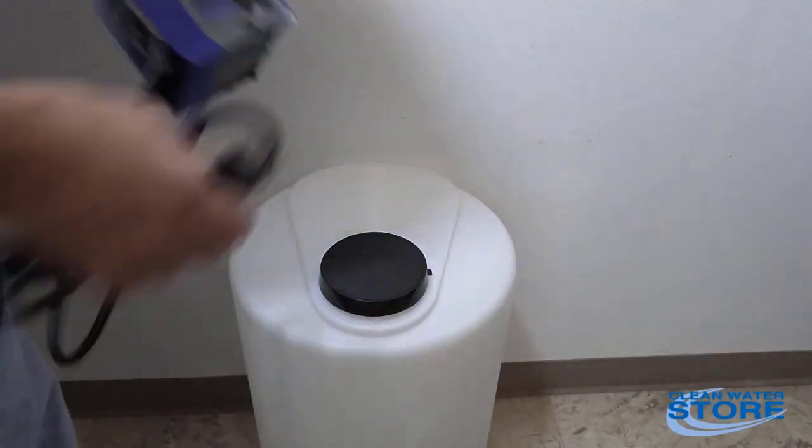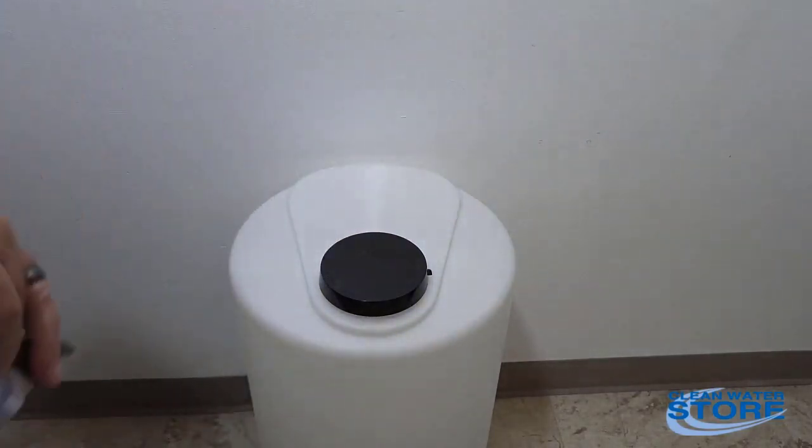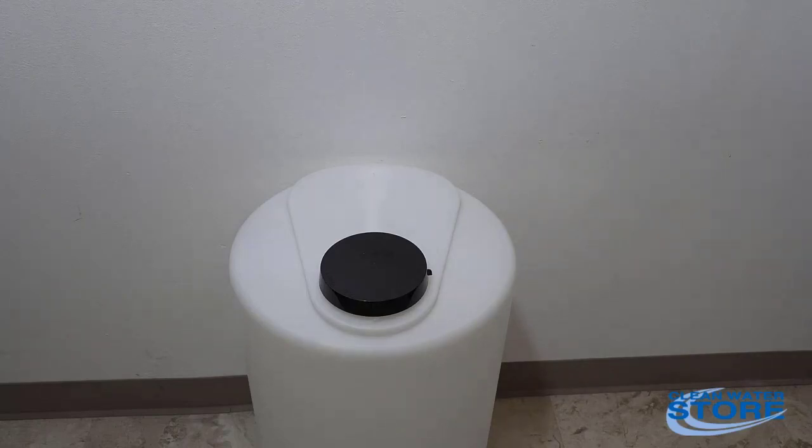The first thing we're going to do is mount the pump. We recommend mounting these pumps directly on top of the tank. The shortest distance for that suction hose coming up is better to keep your prime. You can put it on a shelf above, but you don't want it higher than 60 inches above the tank.